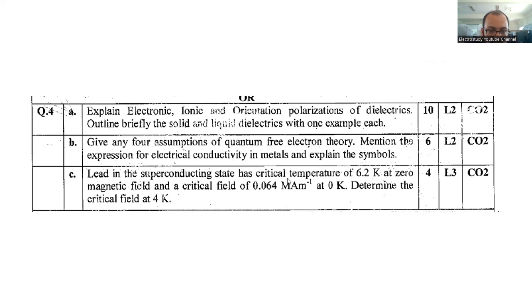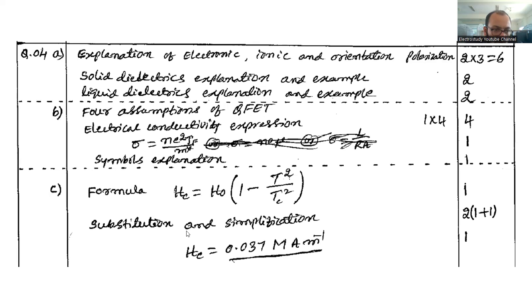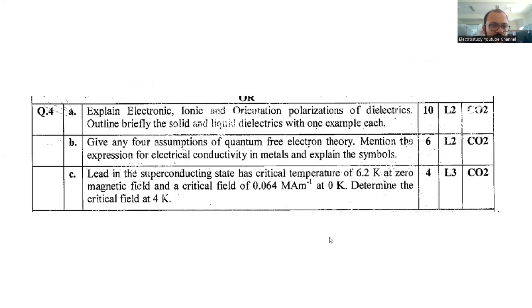Lead in superconducting state has critical temperature 6.2 K at zero magnetic field and critical field of 0.04 MA/m at 0 Kelvin. Determine the critical field at 4K. Formula you are supposed to write down, substitution and explanation three marks. Finally the value of Hc equal to 0.03 MA/m or mA per meter.